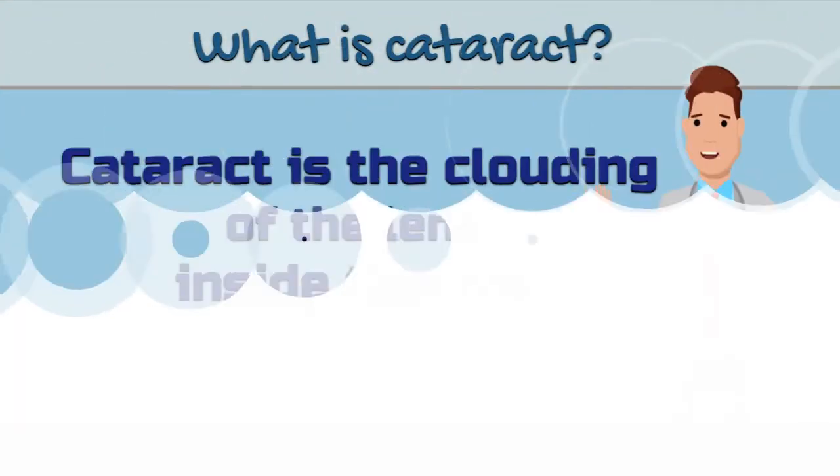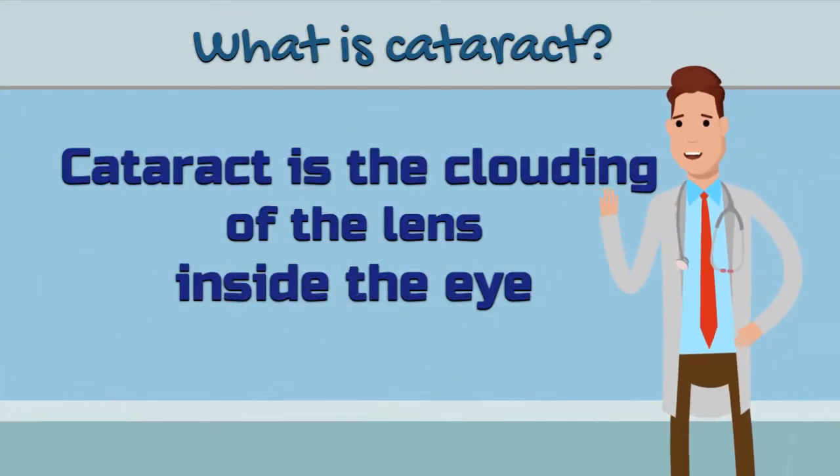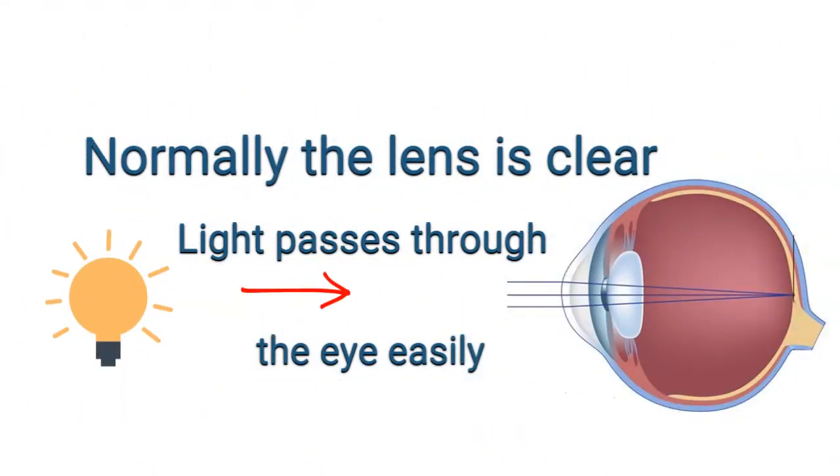So what is cataract? Cataract is the clouding of the lens inside the eye. Normally, the lens is clear and light passes through the eye easily.